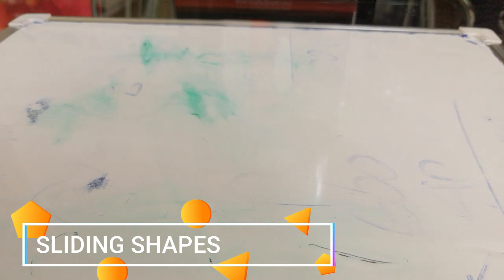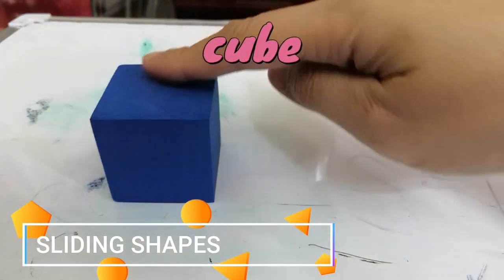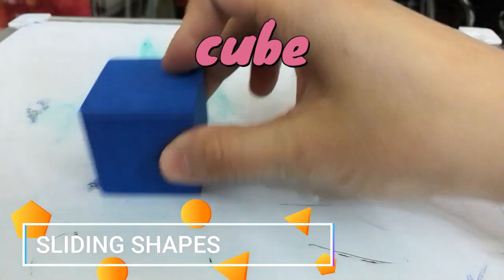These are the shapes that can slide. We have the cube. It has a flat face, so it can slide.